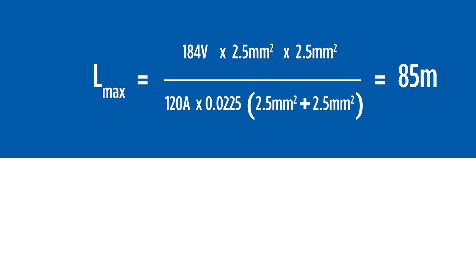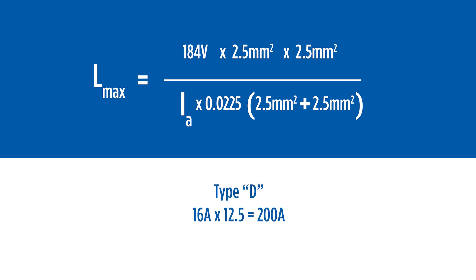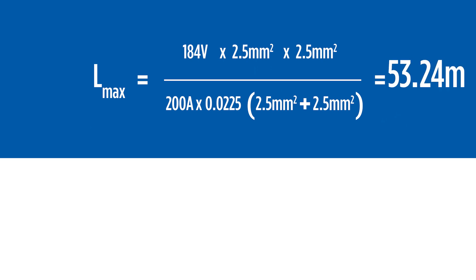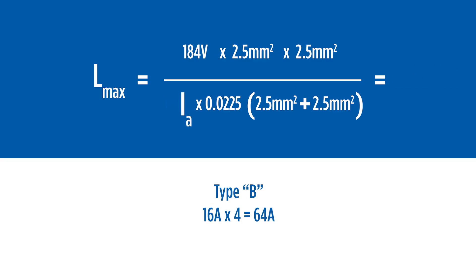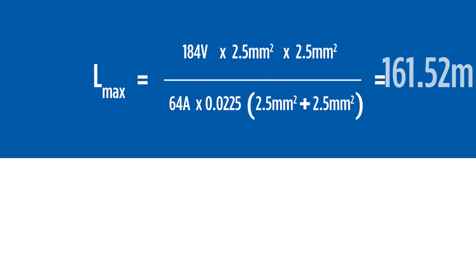A circuit length greater than this may result in fault loop impedance not being satisfied. Swapping the C-type breaker for a D-type breaker of the same rated current results in a maximum length of 53.24 metres, as the D-type breaker requires a higher fault current for instantaneous operation. Substituting a B-type breaker in the circuit will significantly increase the maximum circuit length, due to the lower value of fault current required for instantaneous operation.